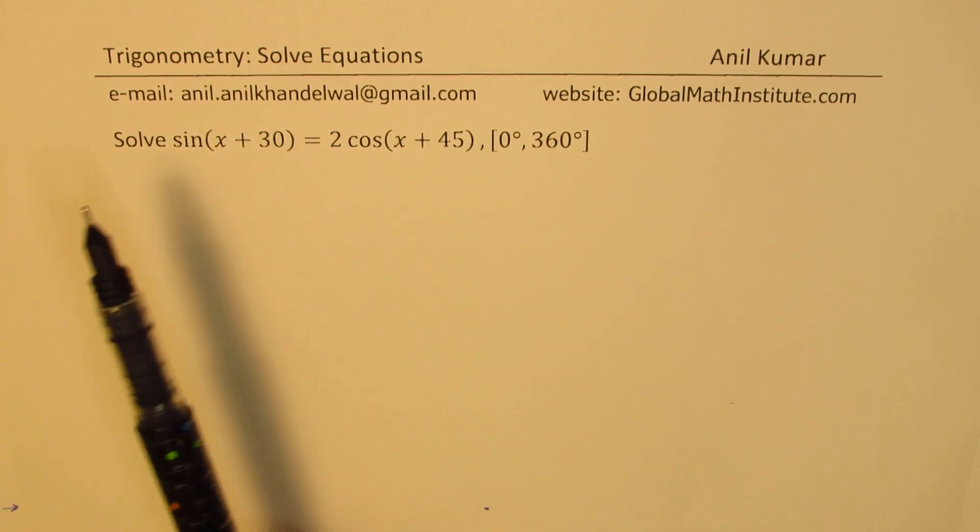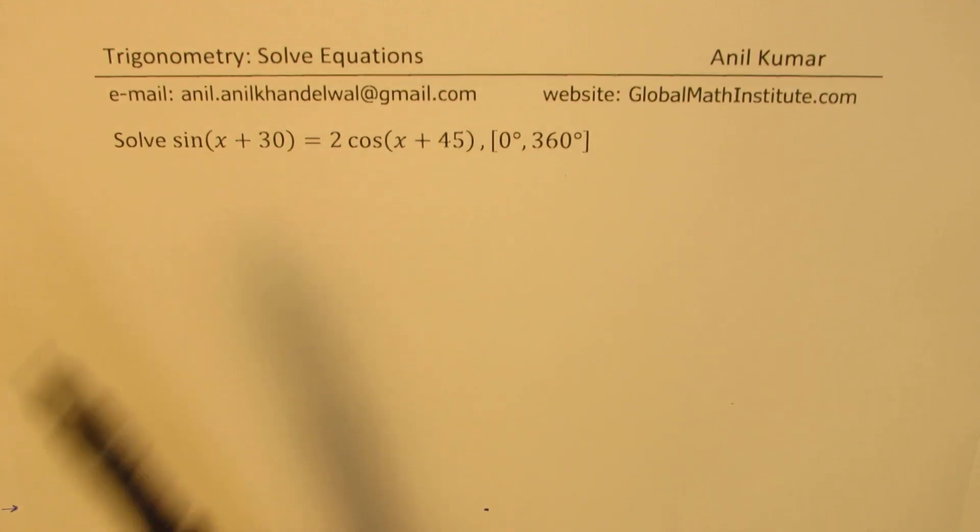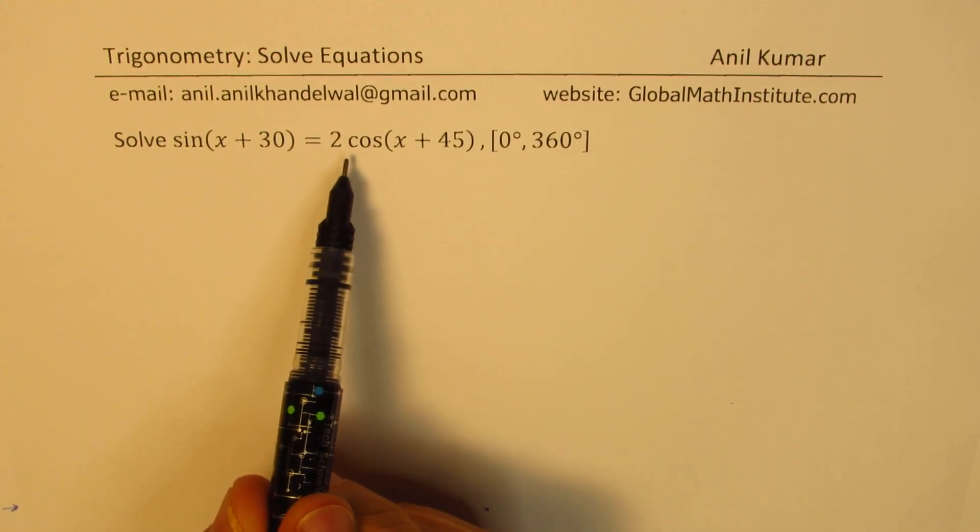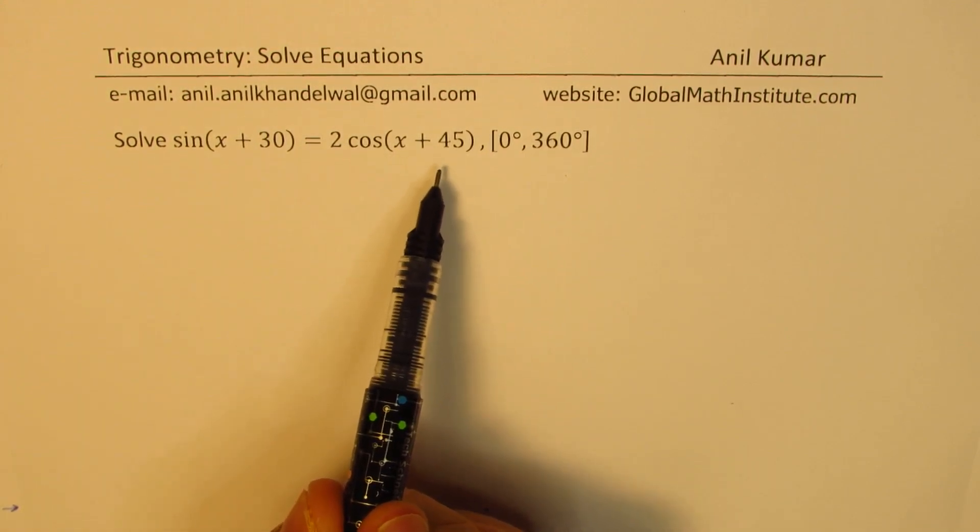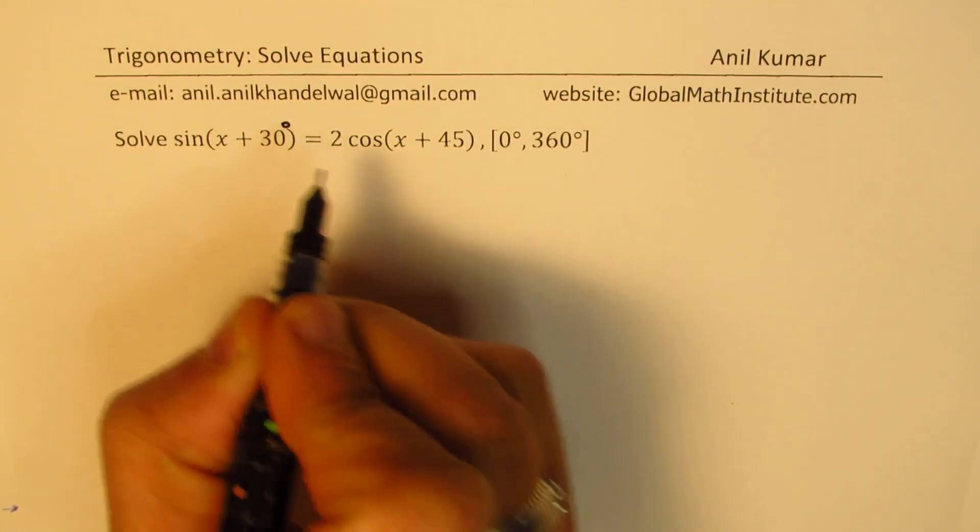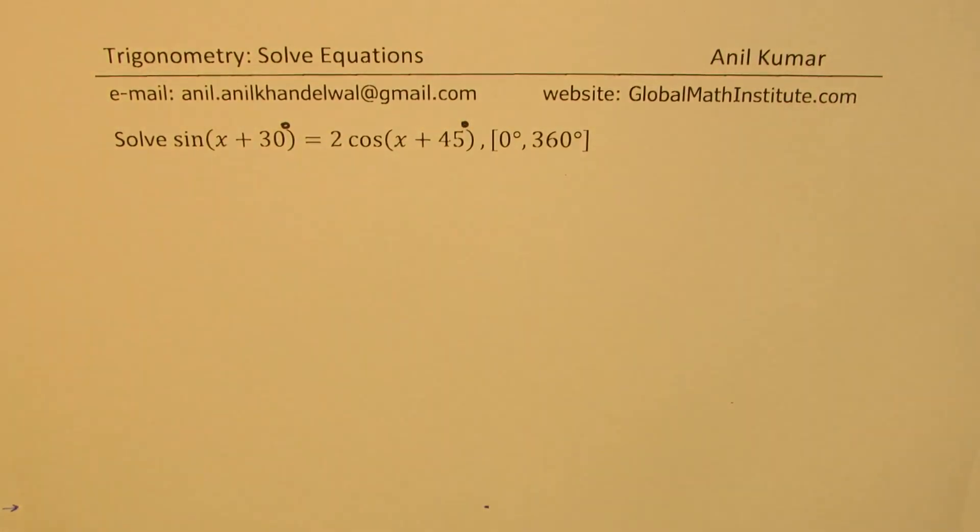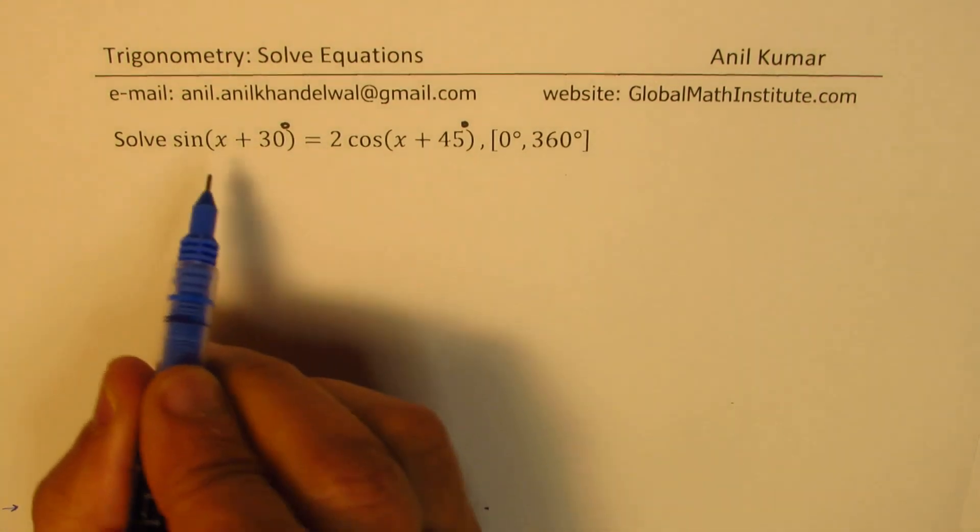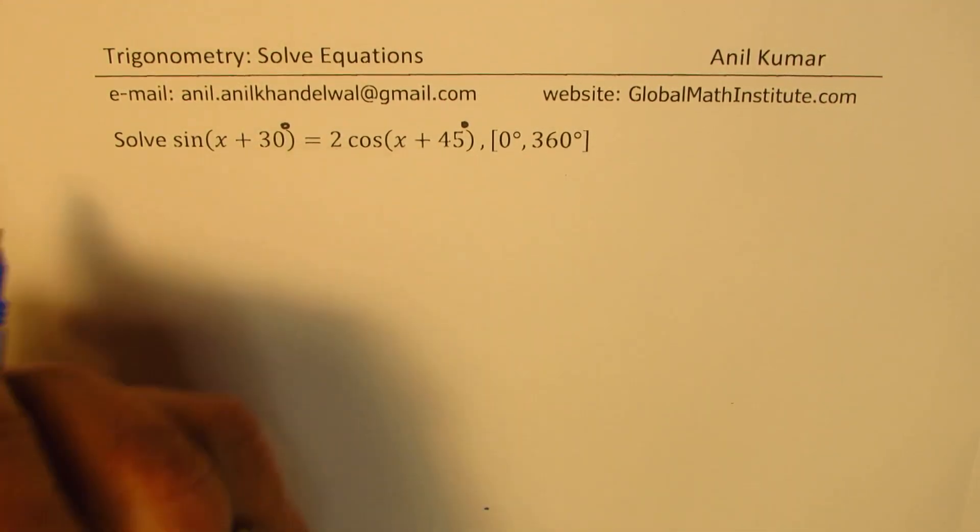The question here is solve sin(x + 30°) = 2cos(x + 45°) where x is between 0 to 360 degrees. So that's the question for you. You can always pause the video, answer the question, and then look into my suggestions. Now in such questions, let's try to expand and simplify.